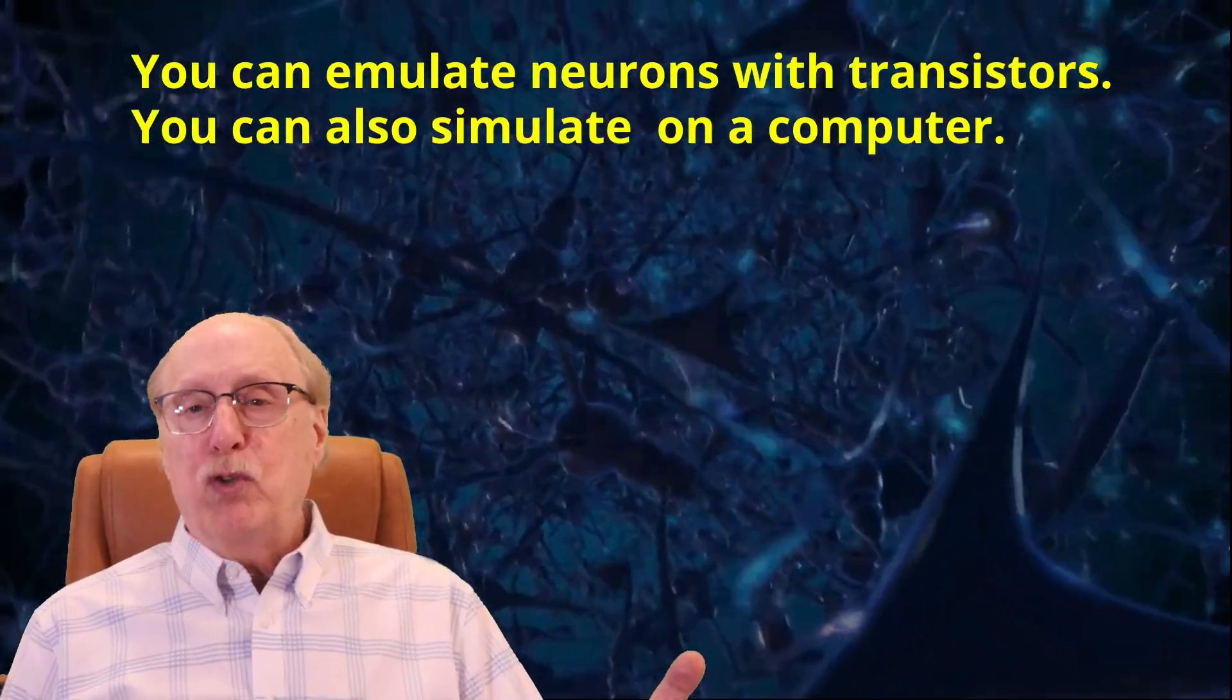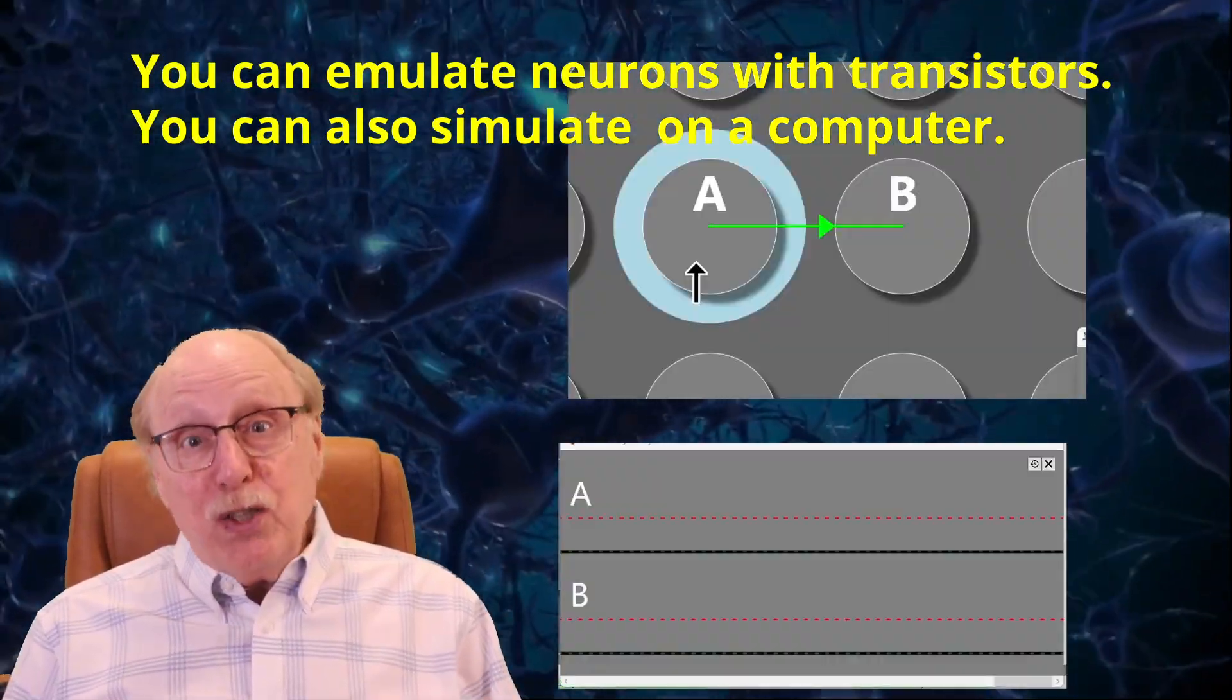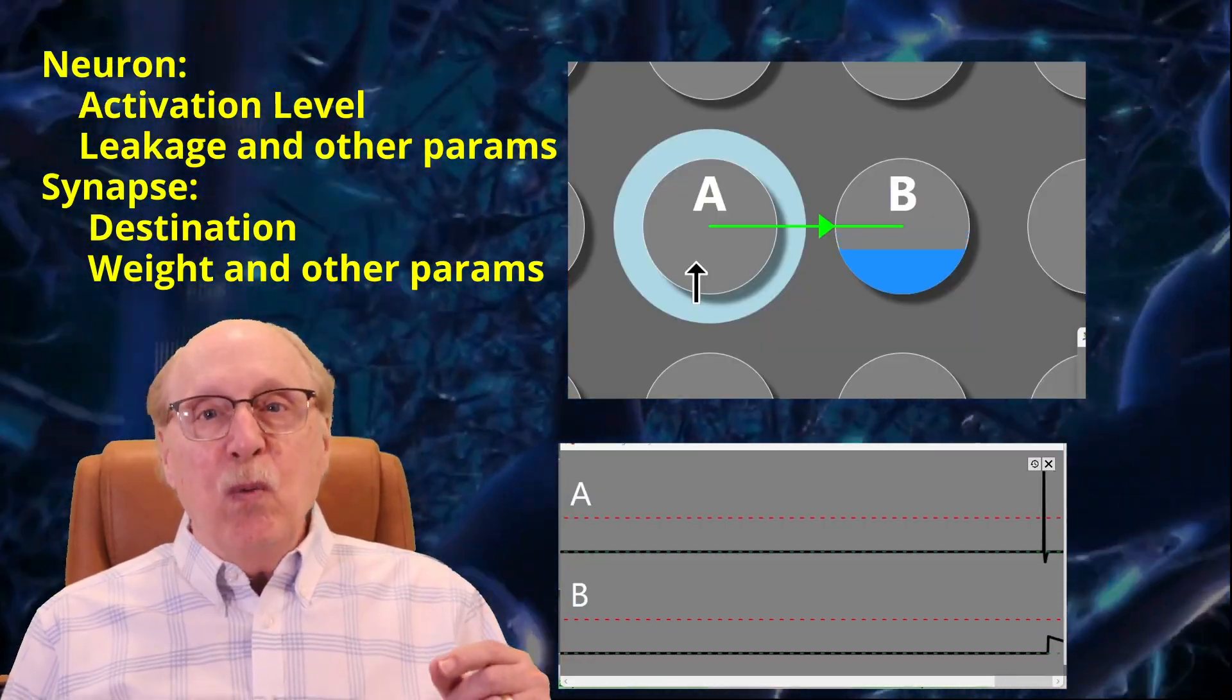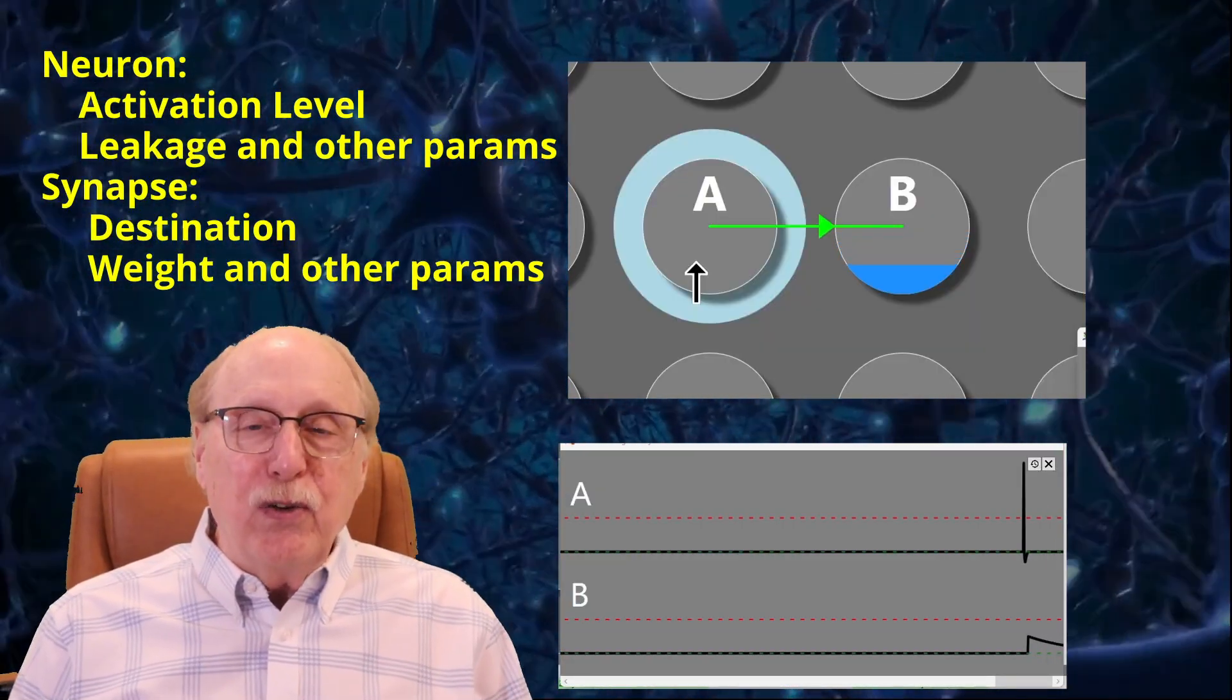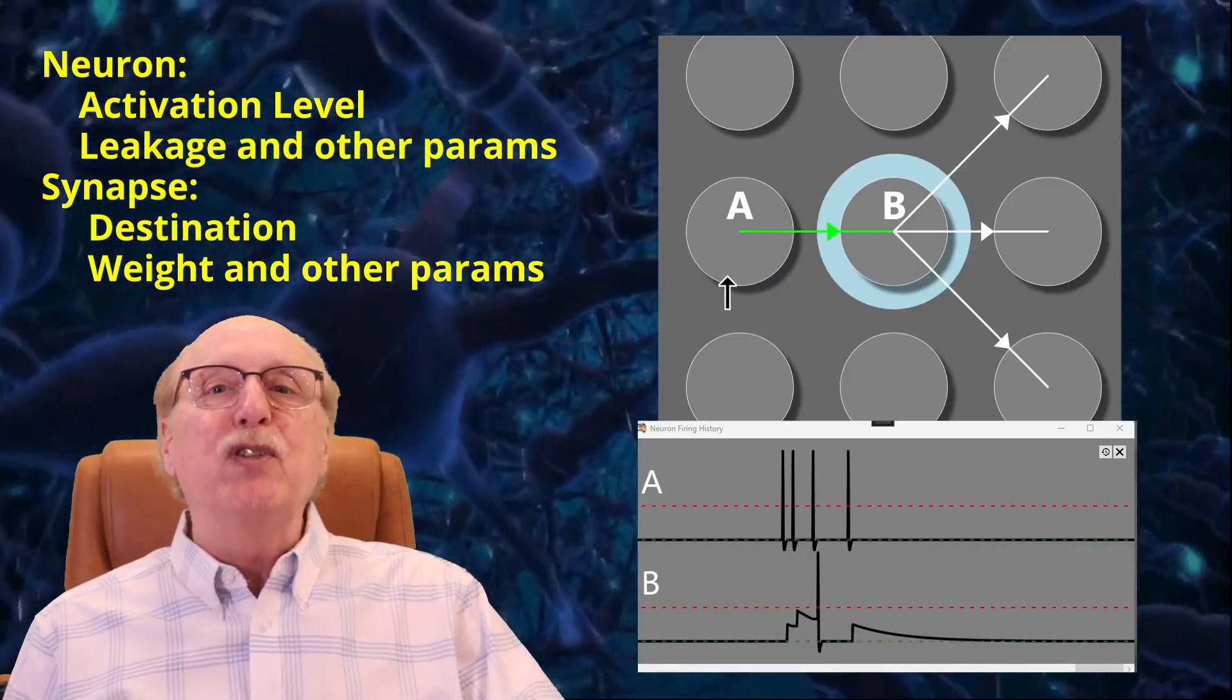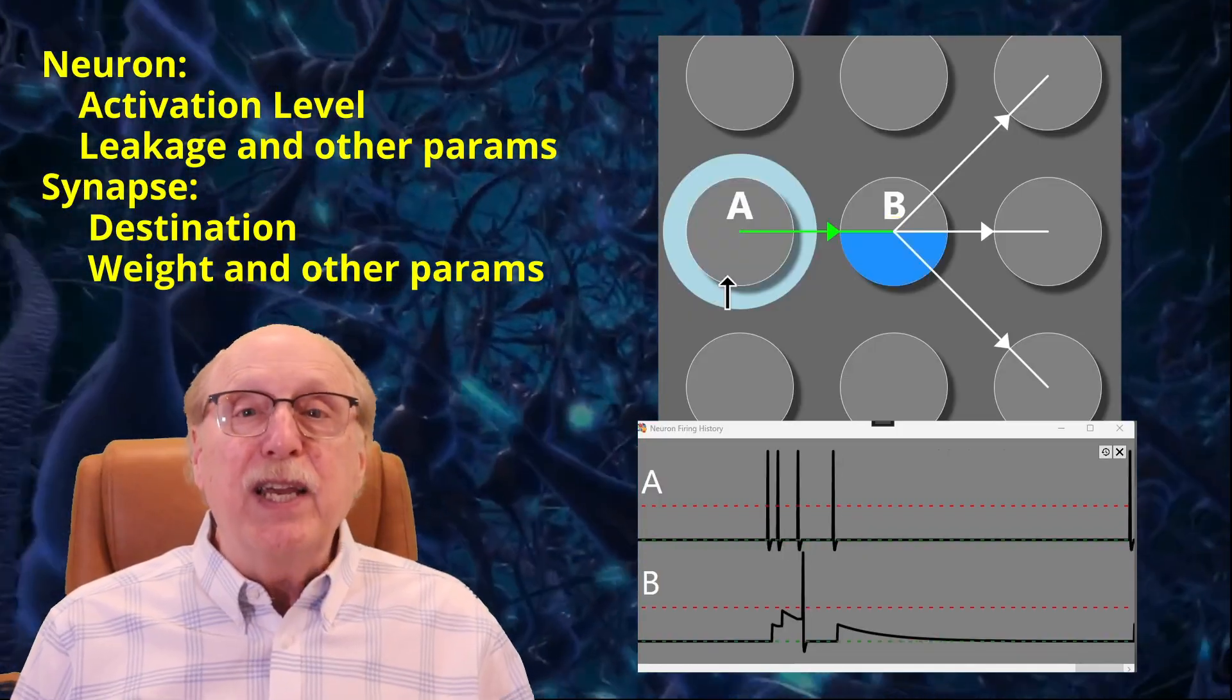Could you emulate a neuron with transistors? Sure. But at the moment, it's much more practical to simulate neurons on a computer. We have a number representing the current activation level, numbers representing the weights of the synapses, and others to indicate where the synapses connect.